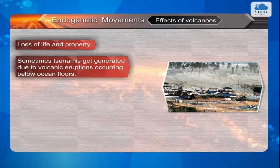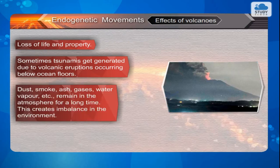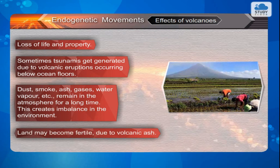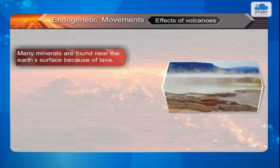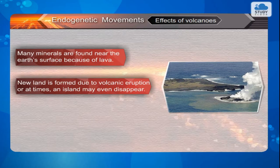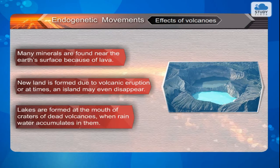Effects of volcanoes: Loss of life and property. Sometimes tsunamis get generated due to volcanic eruptions occurring below ocean floors. Dust, smoke, ash, gases, and water vapour remain in the atmosphere for a long time, creating imbalance in the environment. Land may become fertile due to volcanic ash. Many minerals are found near the Earth's surface because of lava. New land is formed due to volcanic eruption, or at times an island may even disappear. Lakes are formed at the mouth of craters of dead volcanoes when rainwater accumulates in them.